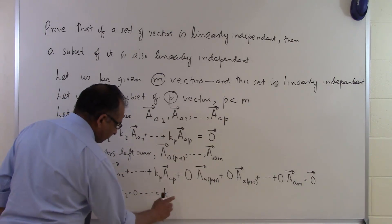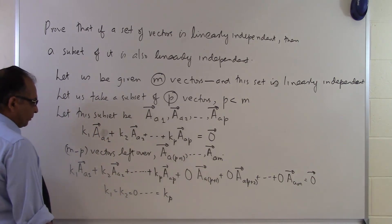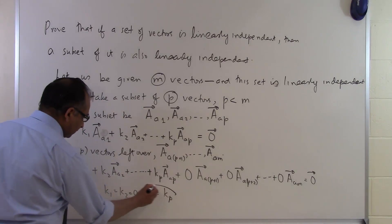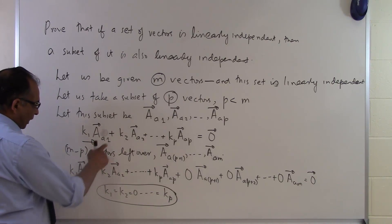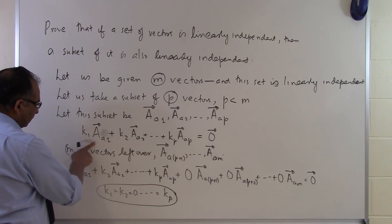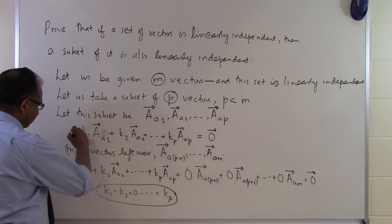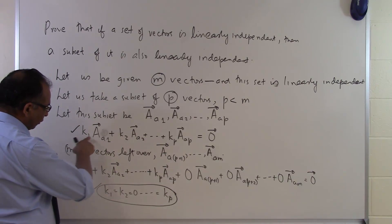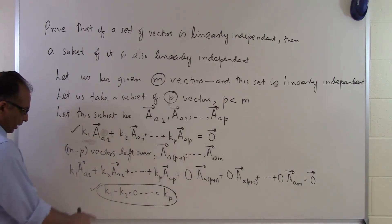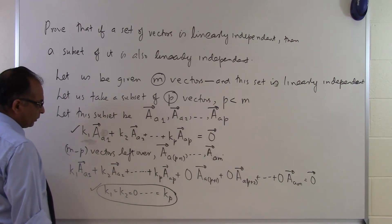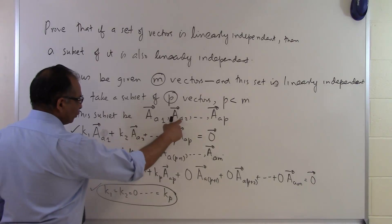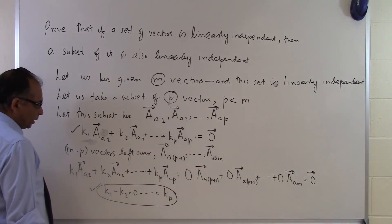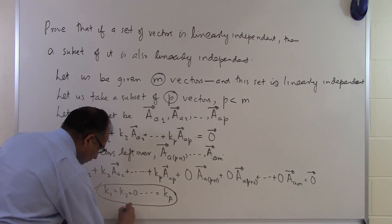So kp = 0 as well. The only possible solution for the linear combination of our p subset vectors set equal to zero is k1 through kp all equal to 0. Therefore this subset is linearly independent, and that completes the proof of this theorem.